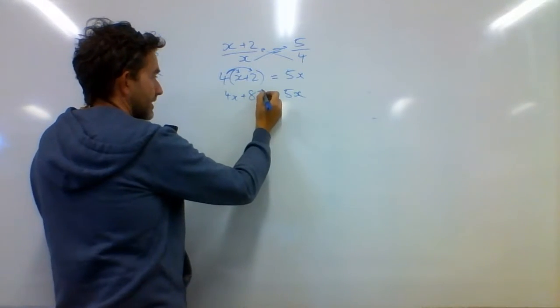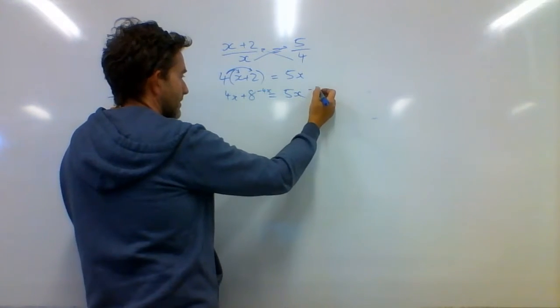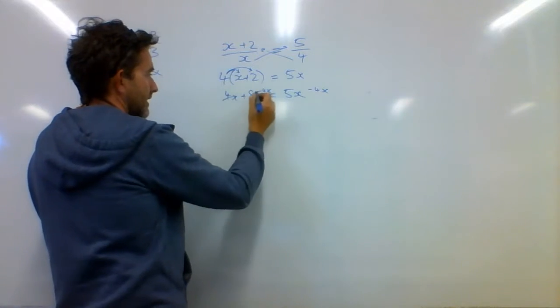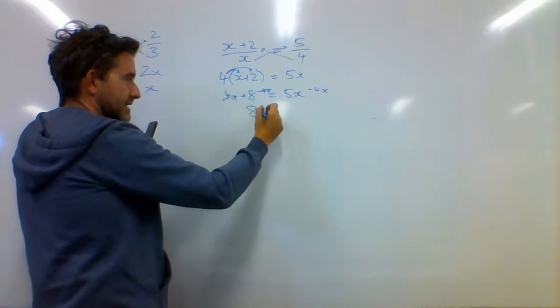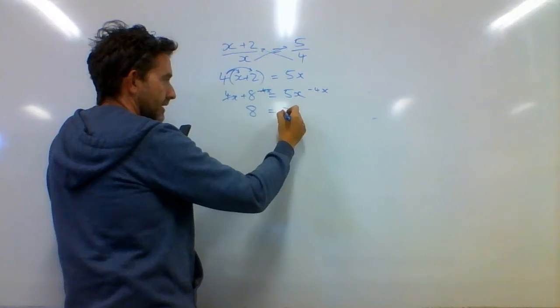So, I'll take 4X on this side, take 4X on that side. The X's cancel out there and I'm left with 8 being equal to X.